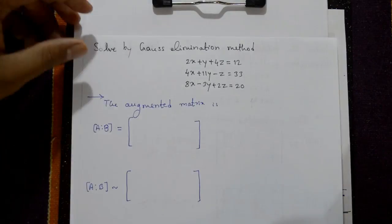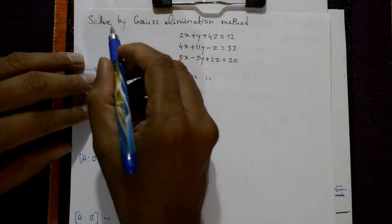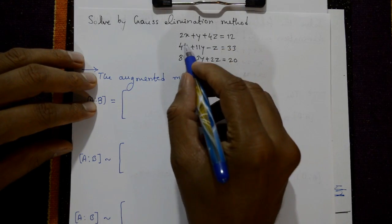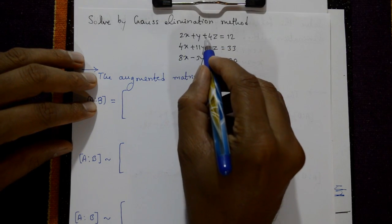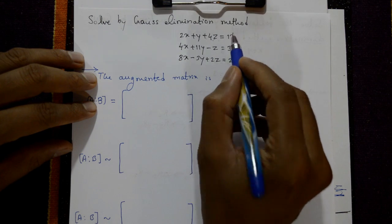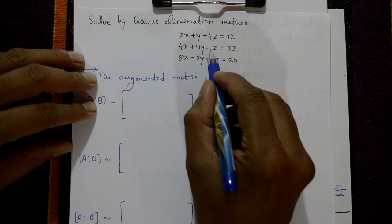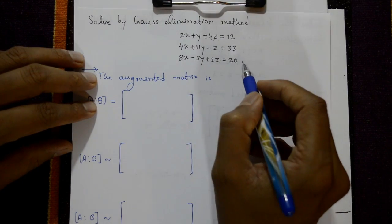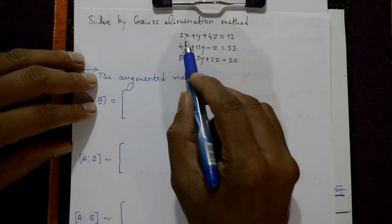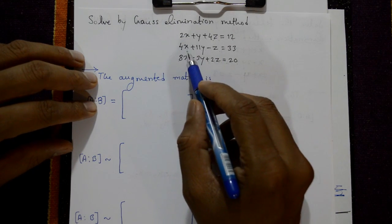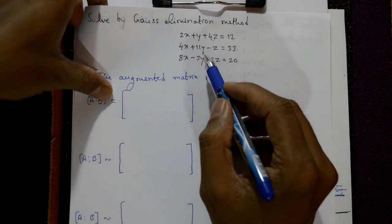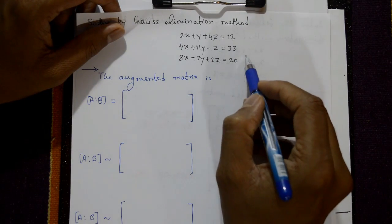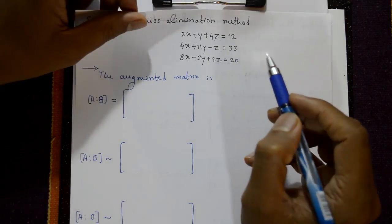Next example: solve by the Gauss elimination method. Three equations are given: 2x plus y plus 4z equal to 12, 4x plus 11y minus z equal to 33, and 8x minus 3y plus 2z equal to 20. The right-hand side values form matrix B: B1, B2, B3.